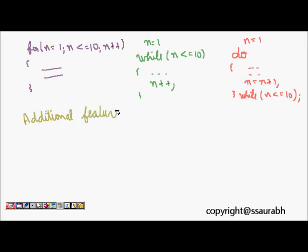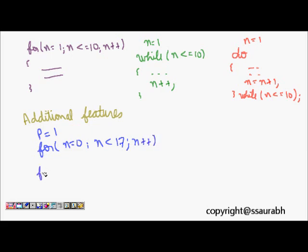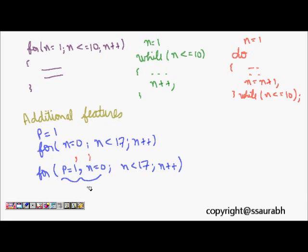Now let's look at additional features of the for loop. First, we can have two variables in the initialization part. For example, instead of initializing `p` separately, we can write `for (p = 1, n = 0; n < 17; n++)`. You can have any number of variables in the initialization — the only thing is you separate them with a comma instead of a semicolon.